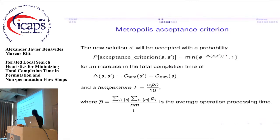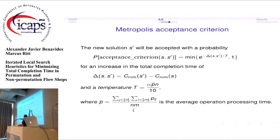The final building block is the acceptance criterion. We use the Metropolis acceptance criterion: it accepts a solution if it is better, and if it is worse it uses an exponentially decreasing acceptance probability for increasing difference with the current solution. This is adjusted by temperature parameter alpha, set to the average processing time multiplied by n, divided by 10, since total completion time scales as n times the average processing time.